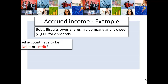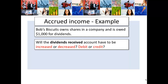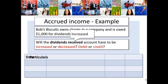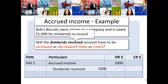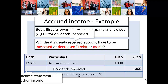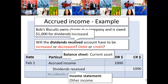Let's have a look at an example. Bob's Biscuit owns shares in a company and is owed $1,000 for dividends. Will the dividends received account have to be increased or decreased — debited or credited? So dividends received is income, and the income needs to be increased. The asset — accrued income — is increasing, and dividends received is our income. In the income statement, this is going to be under other income: dividends received.